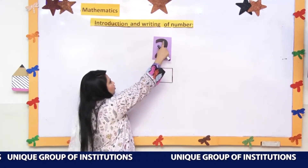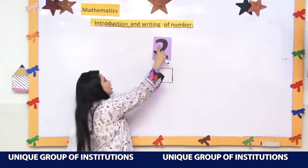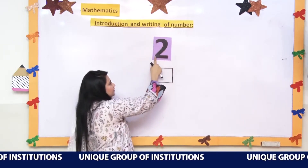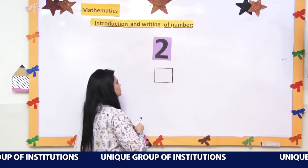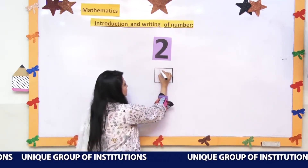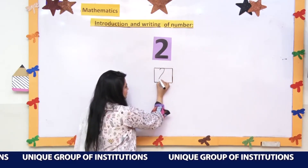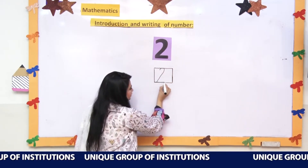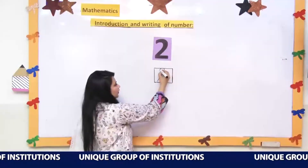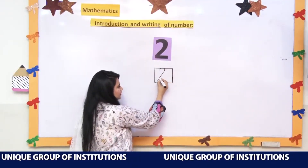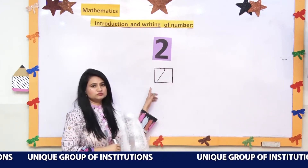Let's learn how to write number 2. First you have to make a curve, then a slant line, and then a slipping line. We will start from the upper line like this, then a slant line, and then a slipping line. A curve line, then a slant line, and then a slipping line. This is the way how to write 2.